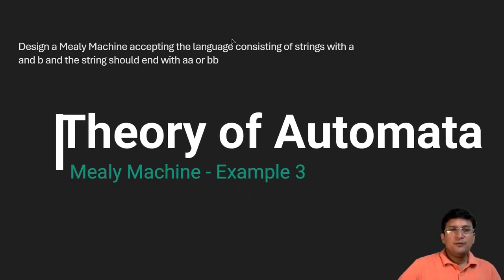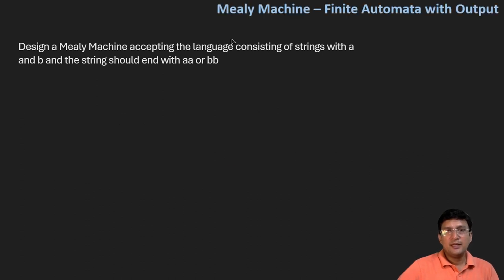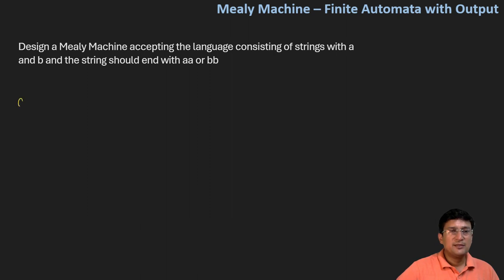We have been asked to design a Mealy machine for the language that consists of strings with A and B symbols only, and the string should end with AA or BB. So what has been asked is that the string can either end at AA or BB, and we have to verify this.